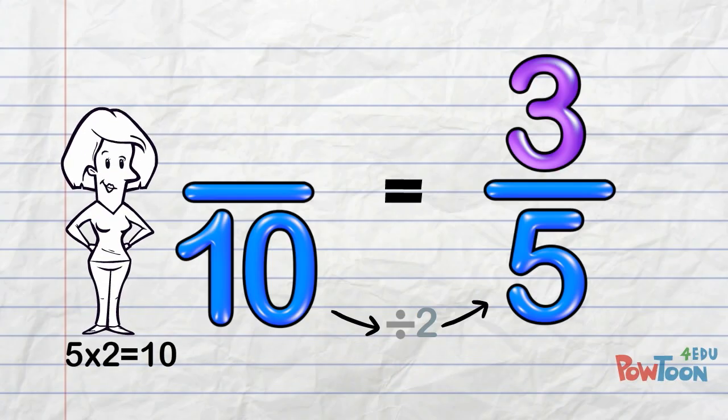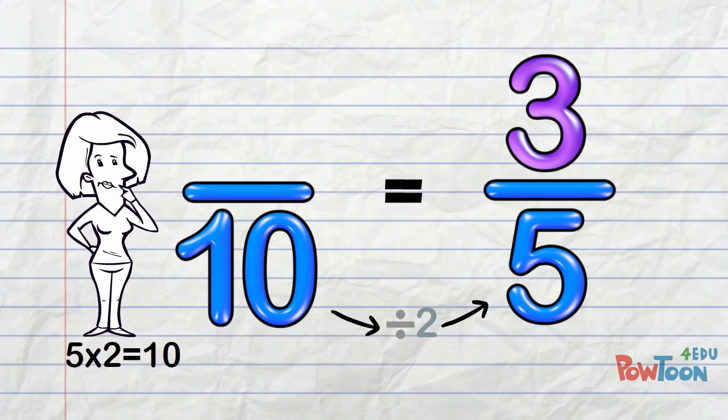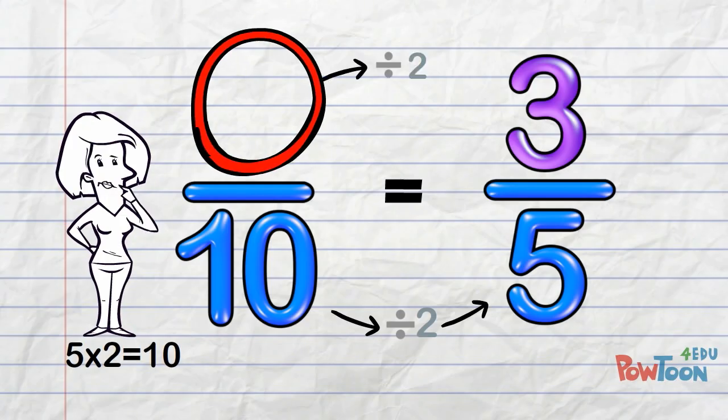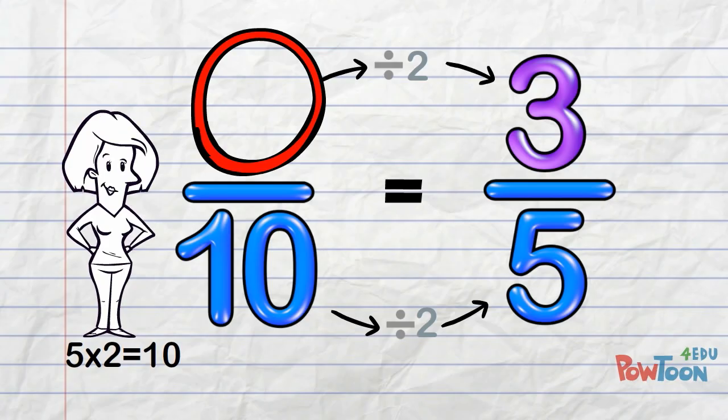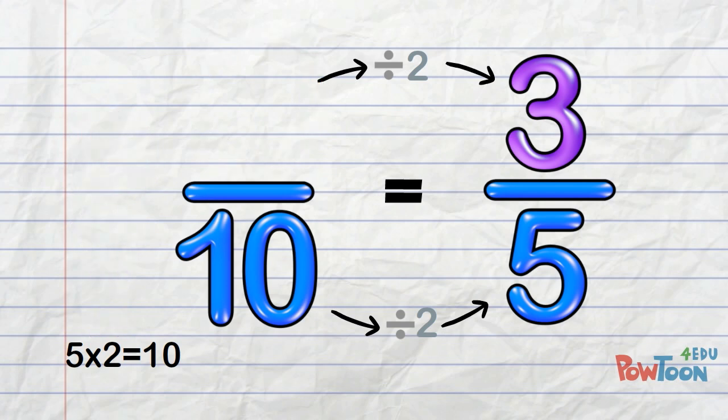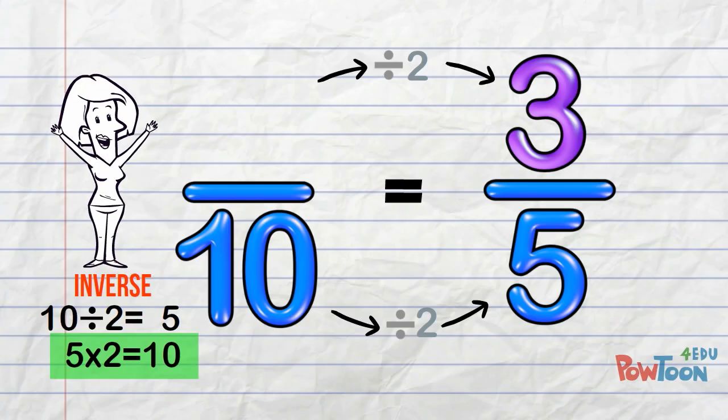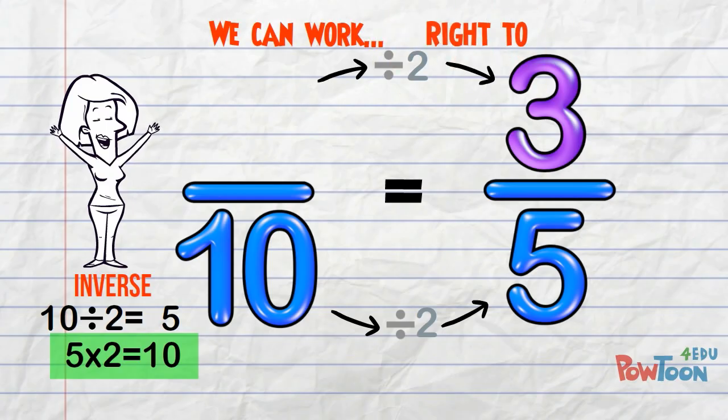For the unfinished part, some students get stuck wondering what number divided by 2 is 3. It can seem hard to do because we're starting from an unknown number position. But don't worry, there's an easy way to do this. Did you notice this 5 times 2 is 10 statement? That's the inverse of 10 divided by 2 is 5. We can use the inverse operation and work right to left.